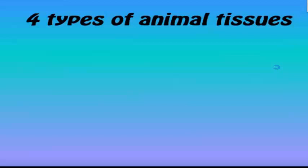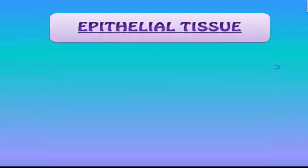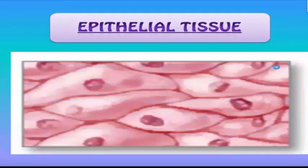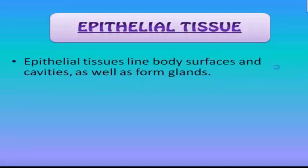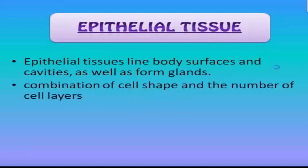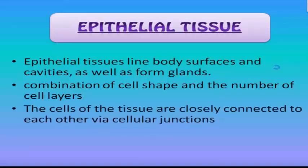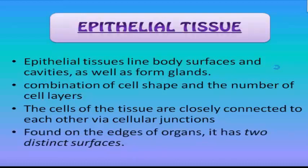We have four types of animal tissues. First, we have the epithelial tissue, as you can see in the image. Epithelial lines body surfaces and cavities, as well as forms glands. These are a combination of cell shape and the number of cell layers. The cells of the tissue are closely connected to each other via cellular junctions.